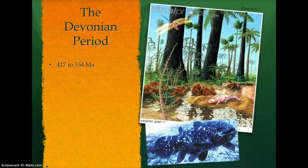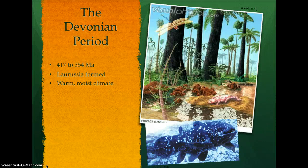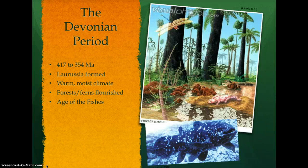Land masses during the Devonian period, starting 417 million years ago, began to shift. Gondwana land headed north, while the supercontinent of La Russia, comprised of North America, Northern Europe, Russia, and Greenland, began to form. The warm, moist climate of the Devonian period allowed for further development of various life forms. The first forests arose during the Devonian period as plants able to survive on dry land developed. Known as the Age of the Fishes, the Devonian period spawned some groups still in existence today.